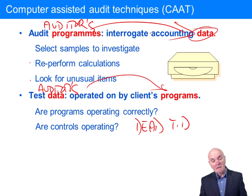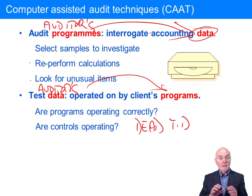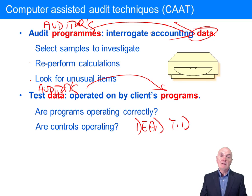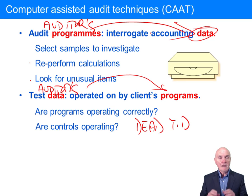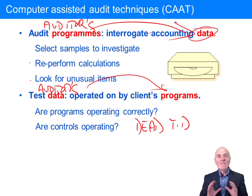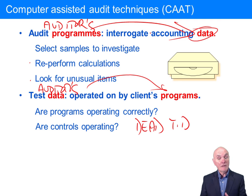Computer-assisted audit techniques tend to be a little expensive in the first year. You have to amend your programmes so they will read the particular patterns of data the client is holding, think carefully about the test data, and go to the bother of getting copies of the systems. So it's a little expensive in the first year, but thereafter it is fantastic — you get enormous amounts of audit information and testing done very, very quickly. It's very efficient and very effective at not only examining data, but testing the operation of the client's programmes.